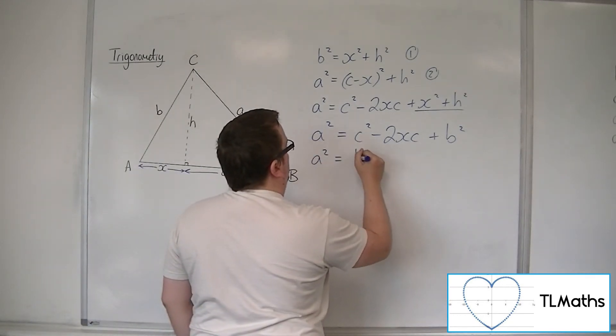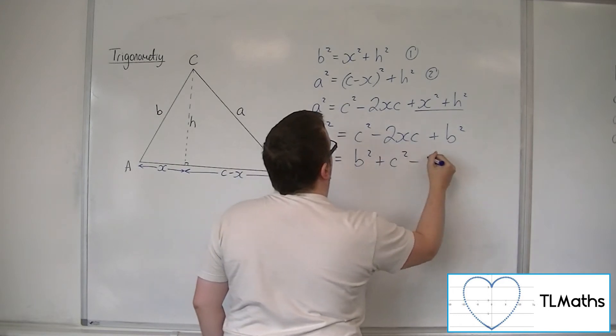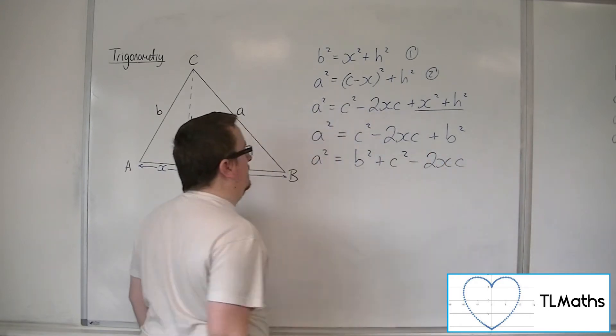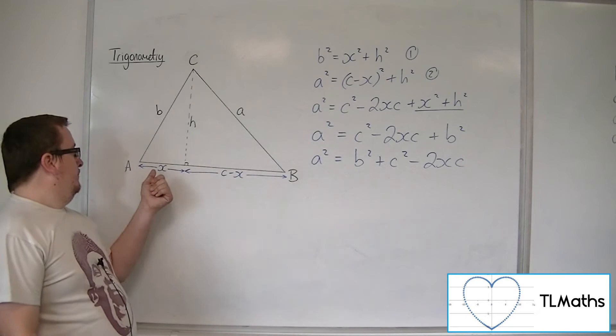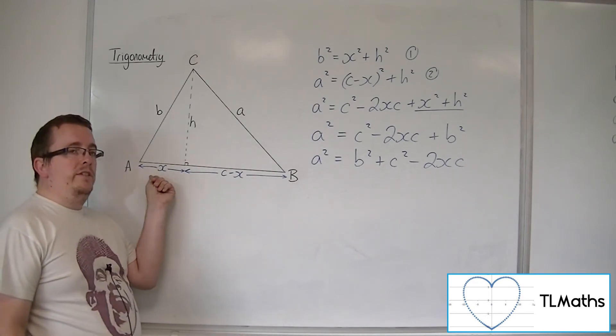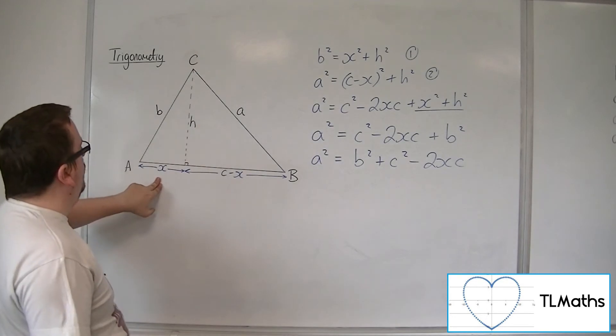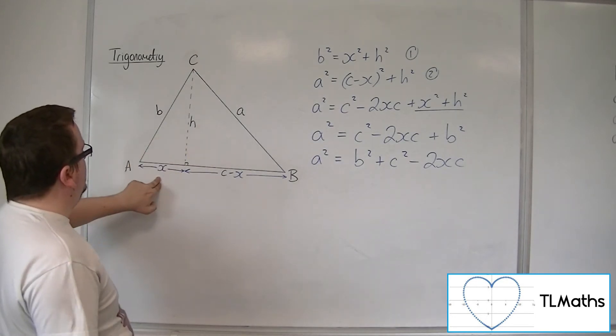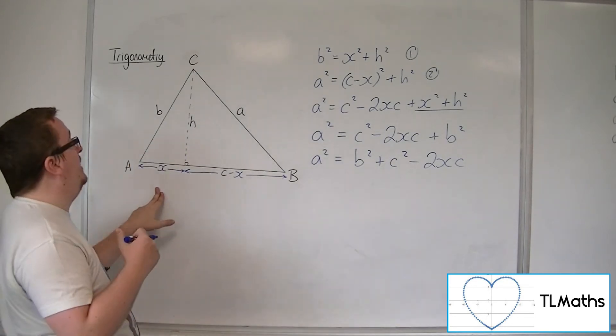Now let's rewrite that because that's B squared plus C squared minus 2XC. Now side X we can write in an alternative way because we don't want it in terms of H. We'd like to have it in terms of the variables that we currently have, the A and the B.